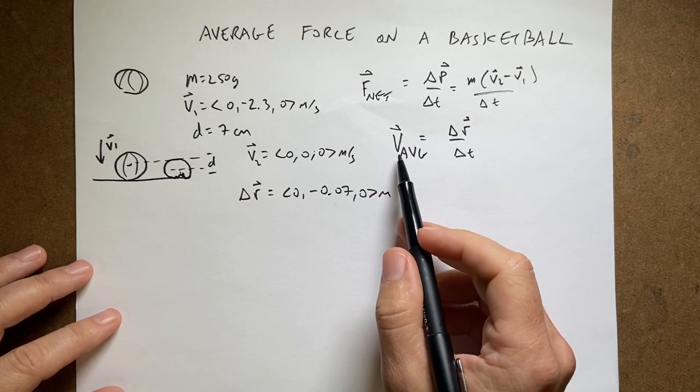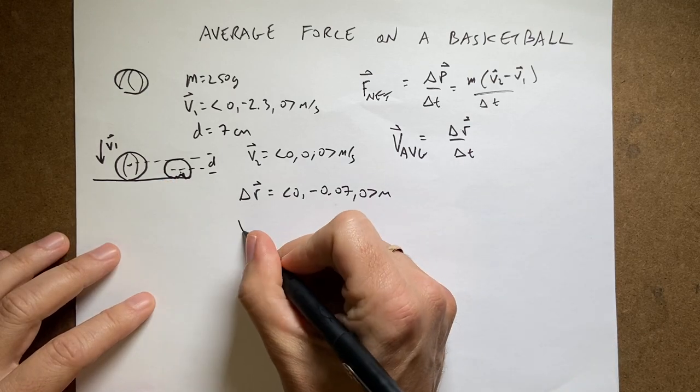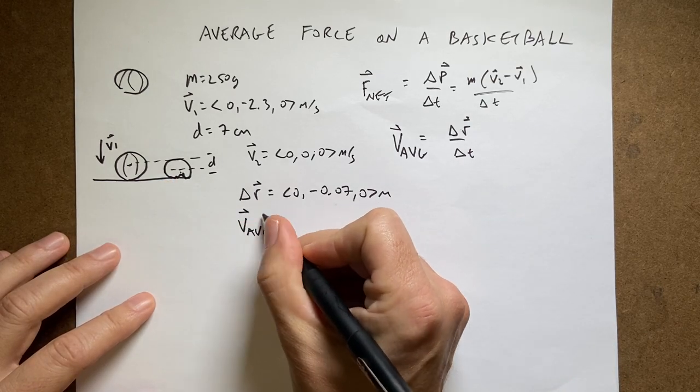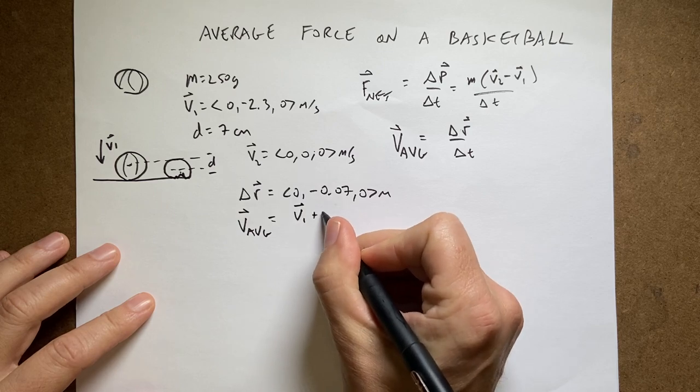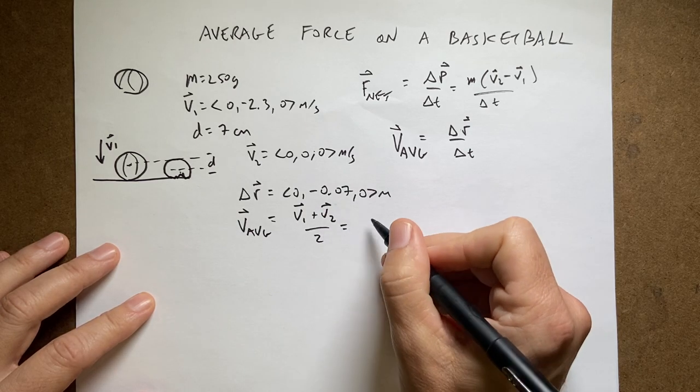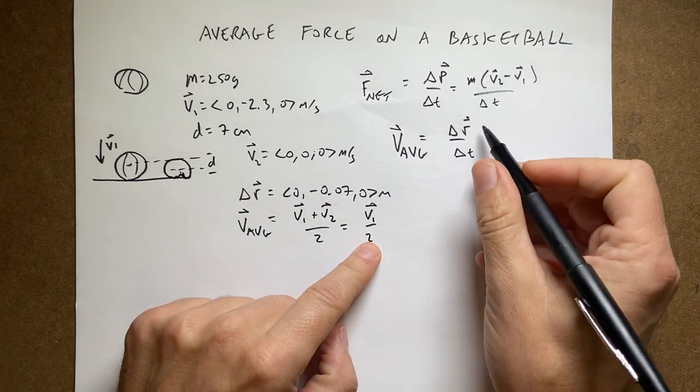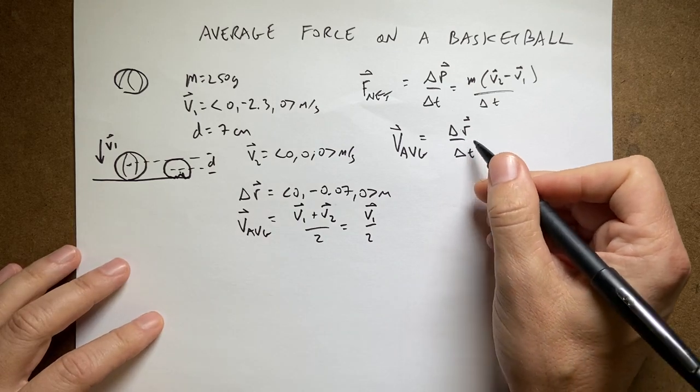So delta r is going to be zero negative zero point zero seven zero meters. I know that the average I can get because I know v1 and I know v2. v2 is zero, so the average is just going to be v1 plus v2 over two, and since v2 is zero this is going to be v1 over two.